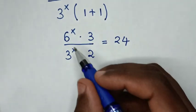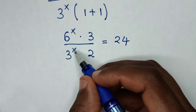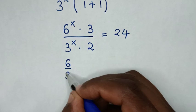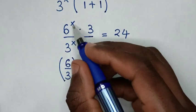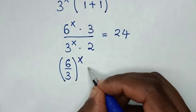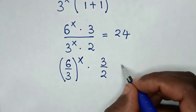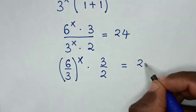Then in the next step, from this division of exponent with same power to be 6 over 3, then bracket common power of x, then times 3 over 2. Then it will be equal to 24.